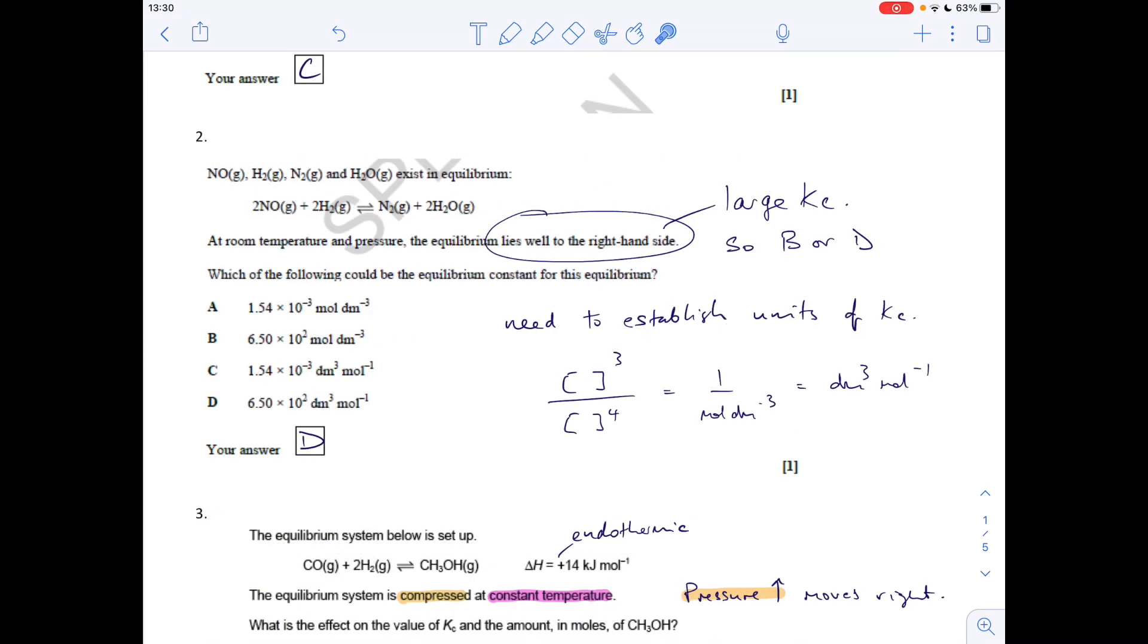Question two - there's a couple of things we need to process. At room temperature and pressure, the equilibrium lies well to the right hand side, meaning it has a large Kc. B and D have large Kc values, so it's one of those. We need to establish the units of Kc. We'd have concentration cubed on top and to the power of four on the bottom. When you cancel the units down, you get 1 over mol dm⁻³. Taking that to the top, you get dm³ mol⁻¹. So D has the right units.